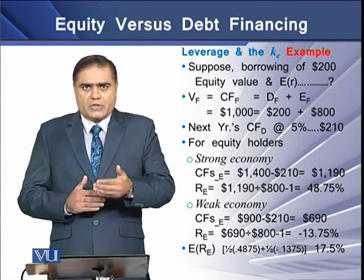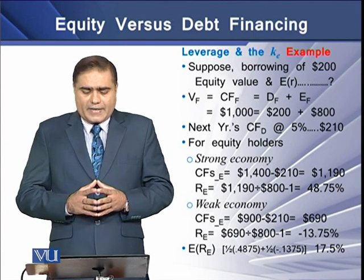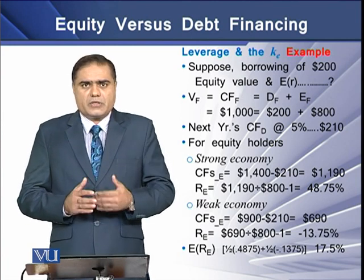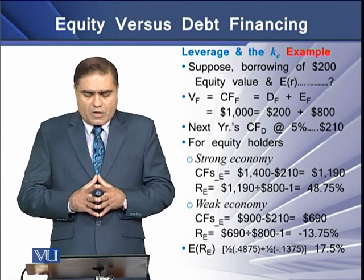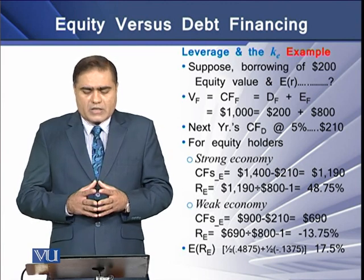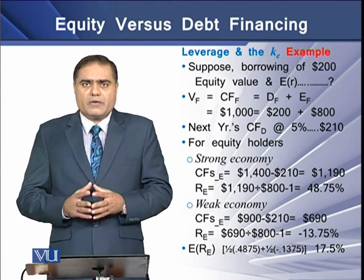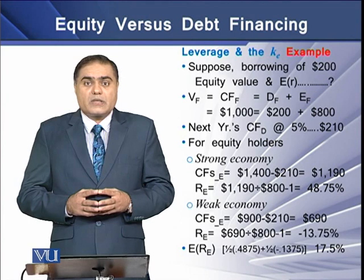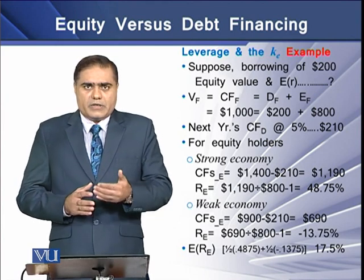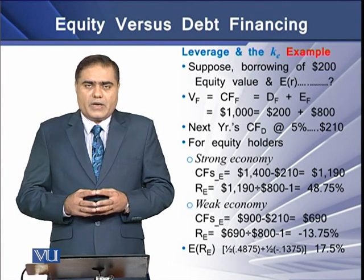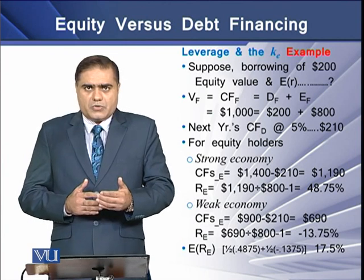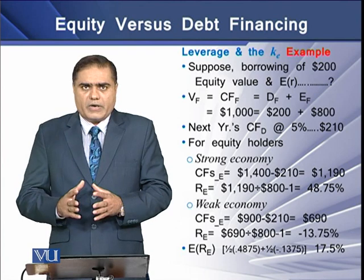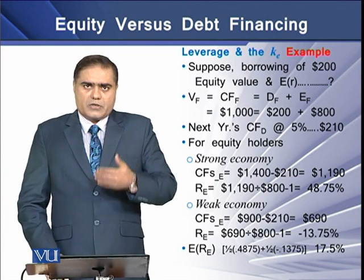Next year's cash flows related to the debt at a 5% rate of interest come to $210. For equity holders we compute the cash flows and return on levered equity. In a stronger economy, levered equity cash flows equal $1,190 with a return of 48.75%, and in a weaker economy levered equity cash flows are $690 with a return of negative 13.75%. The expected return on levered equity comes to 17.5%.